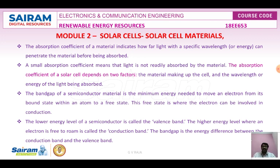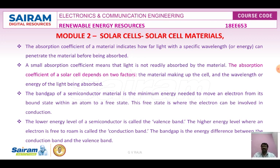If you use silicon, the absorption coefficient is very high. A small absorption coefficient means the light is not readily absorbed by the material, even though some amount of energy is absorbed. The absorption coefficient of the solar cell depends upon two factors: one is the material making up the cell, and the other is the wavelength or the energy of light being absorbed by the device.